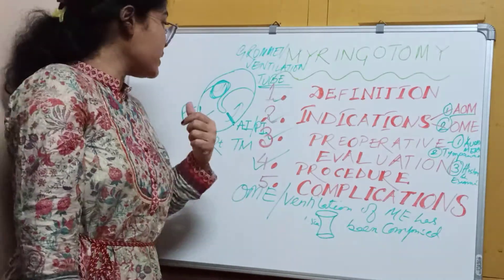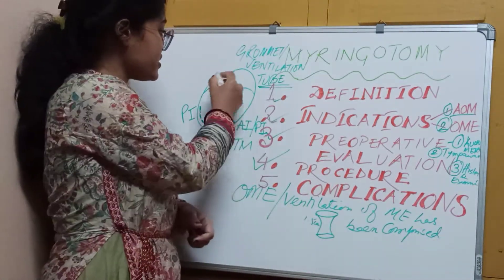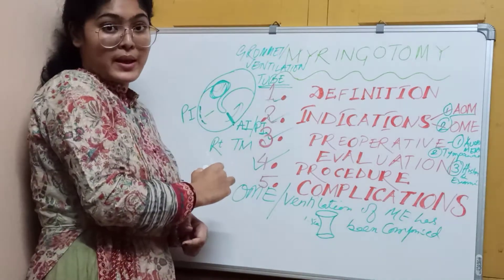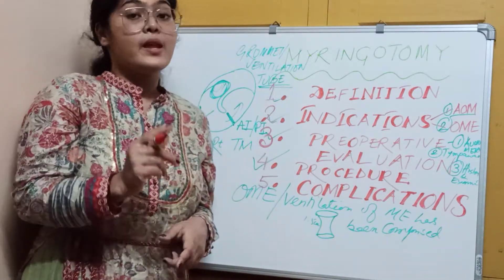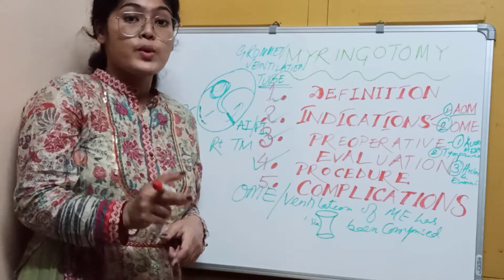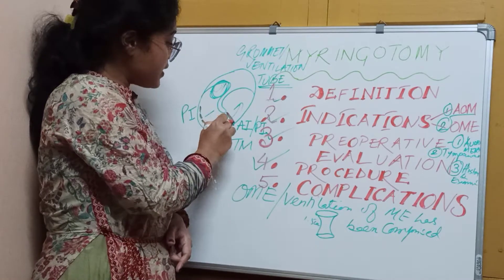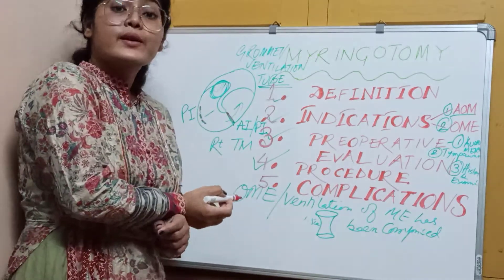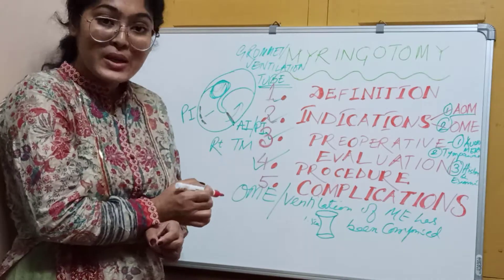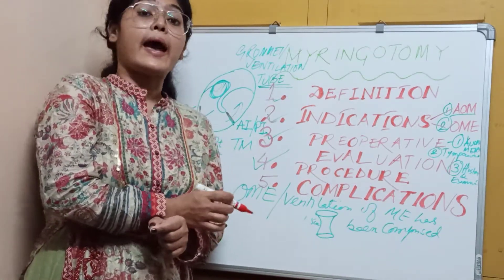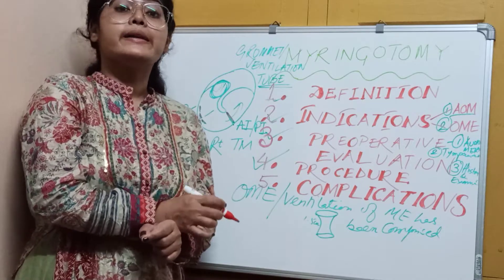Now for the procedure proper, refer to the diagram — this is the right tympanic membrane. There are two types of incision in Myringotomy: number one is a circumferential incision, and number two is a radial incision. The circumferential incision is usually made in the posteroinferior quadrant in cases of acute otitis media. The radial incision is made in the anteroinferior or posteroinferior quadrant in cases of otitis media with effusion.